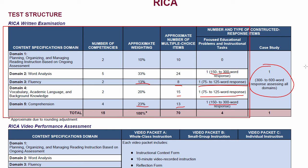One suggestion I always have for students is to outline the case study first if they let you do that through tabbing, then do the multiple choice and try to nail at least 80% of the items, and then go back and do the case study. Something that seems to work is getting familiar with the test for about 5 to 10 minutes, outlining the constructed responses, doing the multiple choice, and then going back and filling in your outlines — or writing the response immediately if you know it.